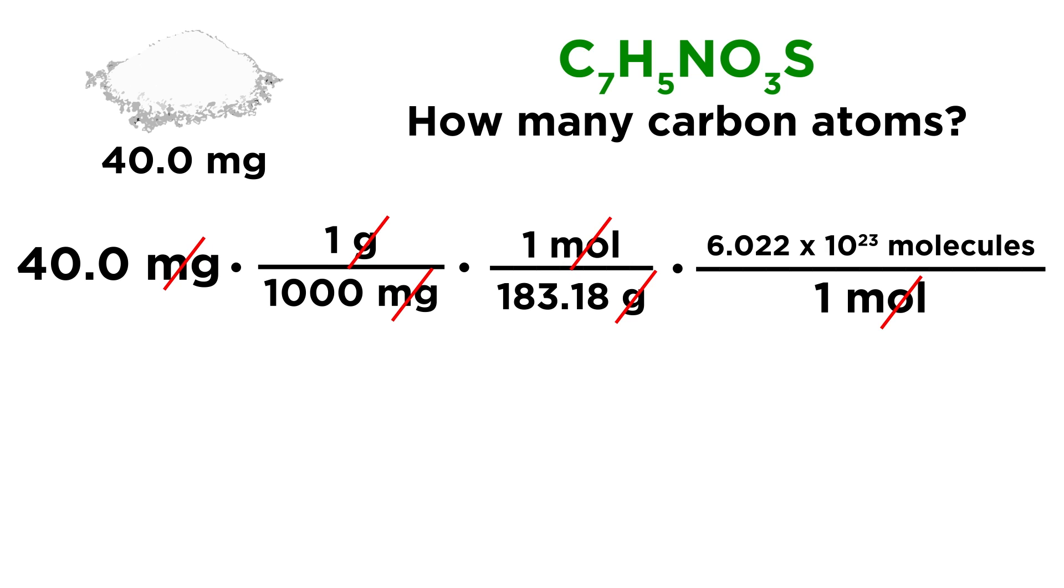And once again, if we do 40 times 6.022 divided by a thousand divided by 183.18, we will get this number and we can leave the 10 to the 23rd separate once again. But now we do have to get the decimal place just to the right of the one. So if we move the decimal place and get 0.0131, we have made that 10 times bigger. So we also have to make it 10 times smaller by decreasing the exponent on the 10 from 23 to 22. We can do it again to get 0.131. So that's 10 times bigger. So to also make it 10 times smaller, we go from 10 to the 22 to 10 to the 21. And then we need to do it one more time. So 1.31, once again, we have made that value 10 times bigger. So to simultaneously make it 10 times smaller and keep the value the same, we have to go to 10 to the 20. So we have 1.31 times 10 to the 20 saccharin molecules.